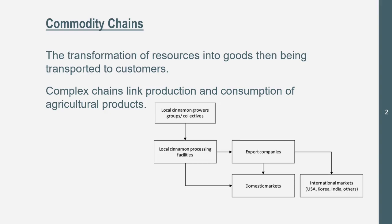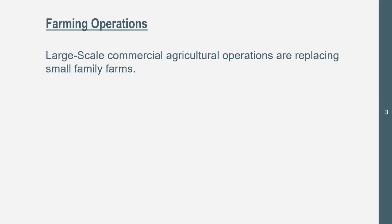These include the processing — we see the facility right here — the exporting, where they're being sold, the markets, who's buying them, where they're harvested, and all of that. That's a commodity chain, and we'll talk about this in just a second with this new topic.